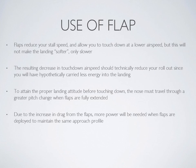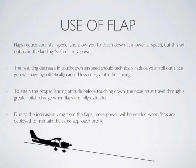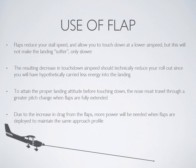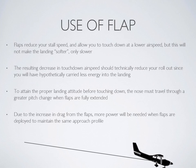Let's talk about flaps. Flaps reduce your aircraft's stall speed and allow you to touch down at a lower airspeed, but this will not make the landing softer — only slower. The resulting decrease in touchdown airspeed should reduce your rollout since you've carried less energy into the landing. To attain the proper landing attitude, the nose must travel through a greater pitch change when flaps are fully extended, since you've trimmed for a much more nose-down approach. Also, due to the increase in drag from flaps, more power will be needed when flaps are deployed to maintain the same approach profile.